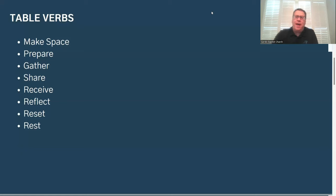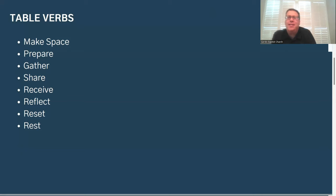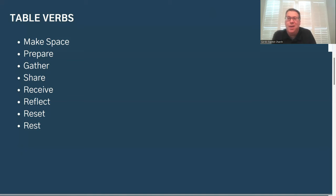One of the things we did in our first session was to think about what happens at a table — really, what are the verbs and actions that we might find at any table, but particularly a communion table here at Sardis. We came up with eight verbs. There are certainly more, but these help us to set the table — pardon the pun — for considering what has to happen in order for communion to take place.